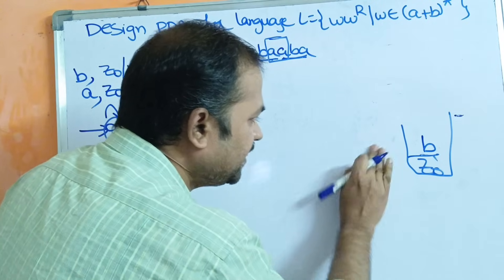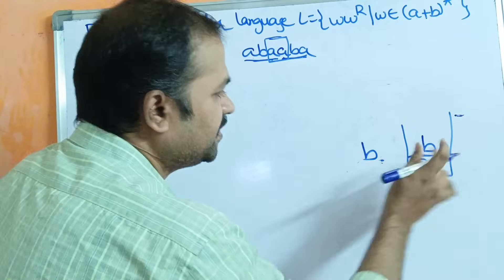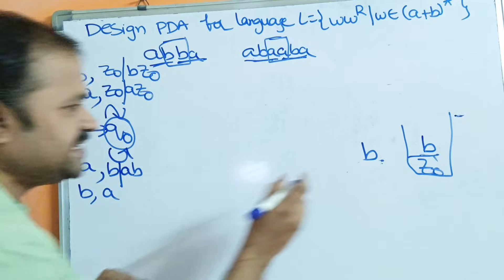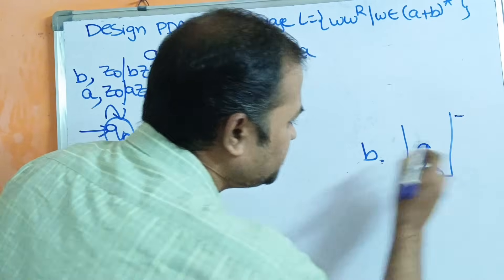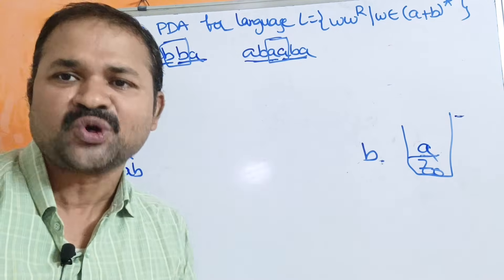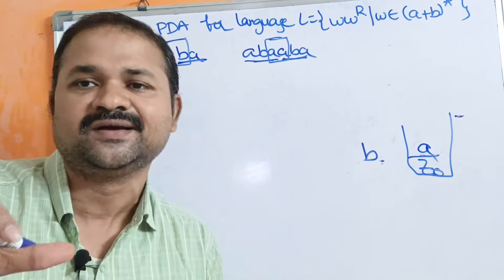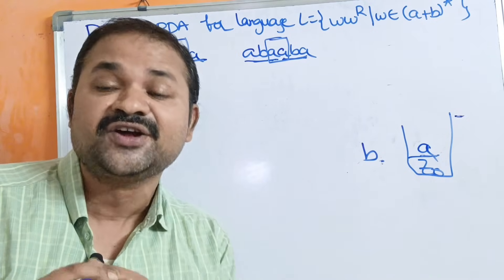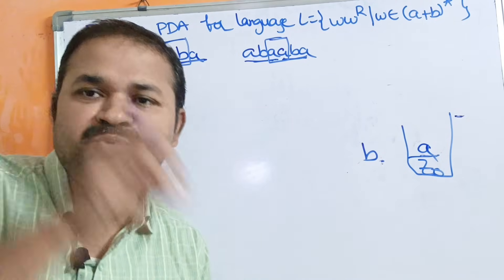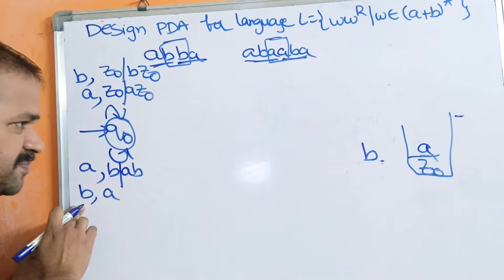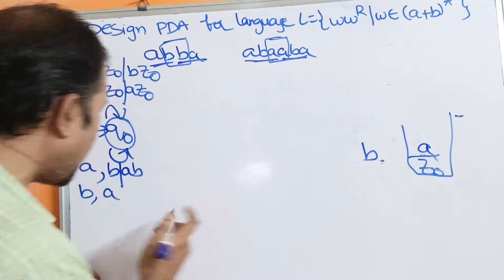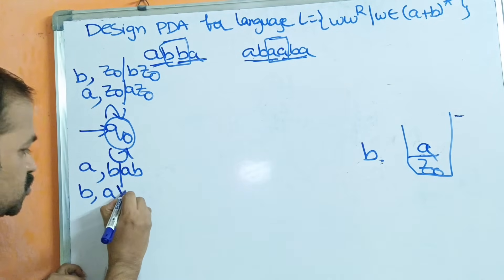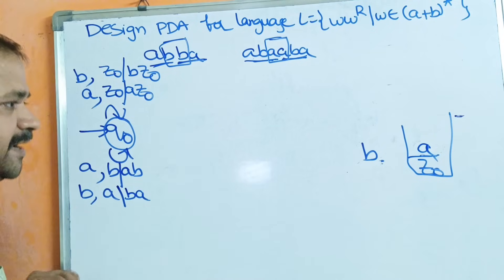Similarly, if the input symbol is B and the stack's topmost symbol is A, we can also assure 100% that the middle part of the string has not been reached. So we can push B onto the stack and remain at Q0. The content of the stack becomes BA.